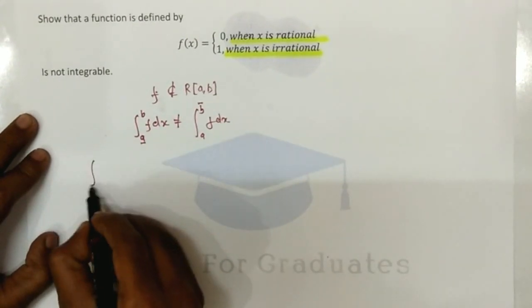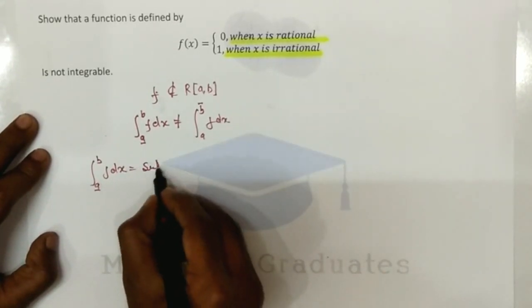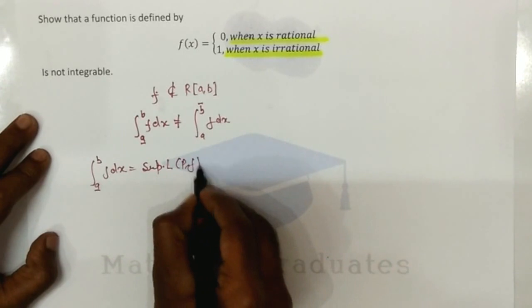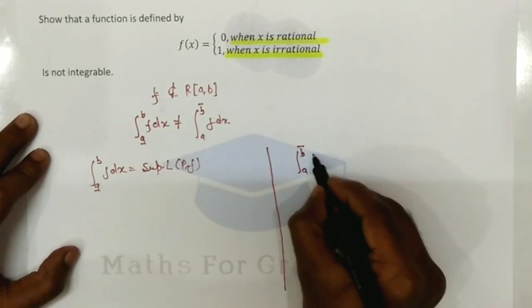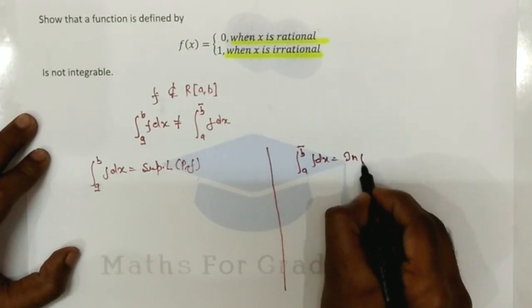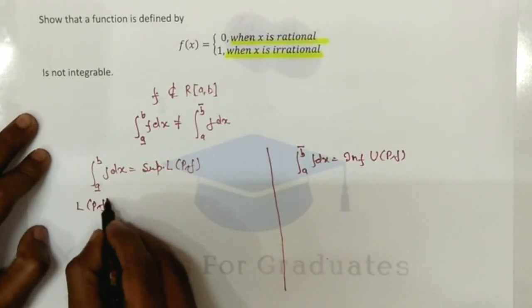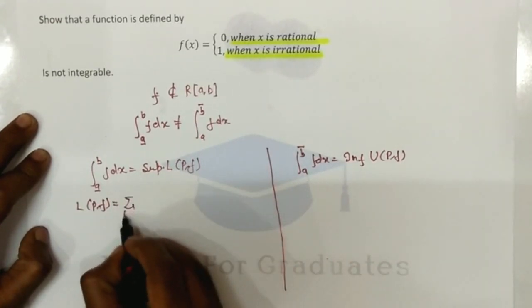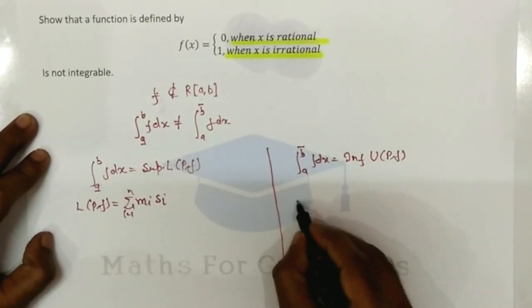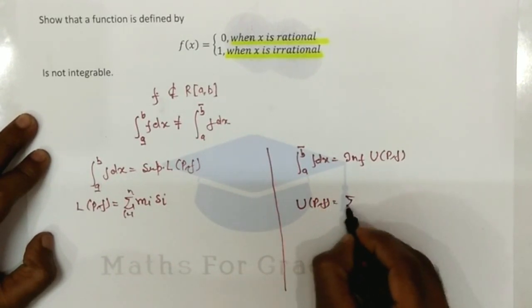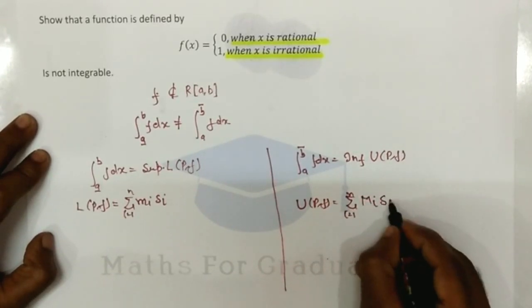The lower Riemann integral is given by the supremum of the lower Riemann sum, while the upper Riemann integral is given by the infimum of the upper Riemann sum. The lower sum is the summation of small m_i and the length of the subinterval Δ_i, and the upper Riemann sum is the summation of capital M_i and the length of the subinterval.